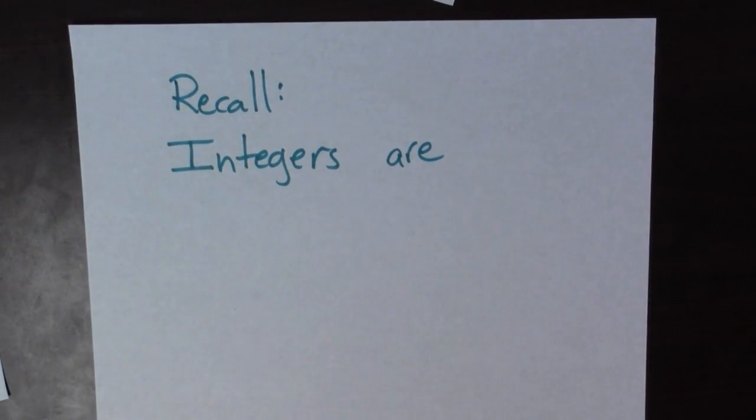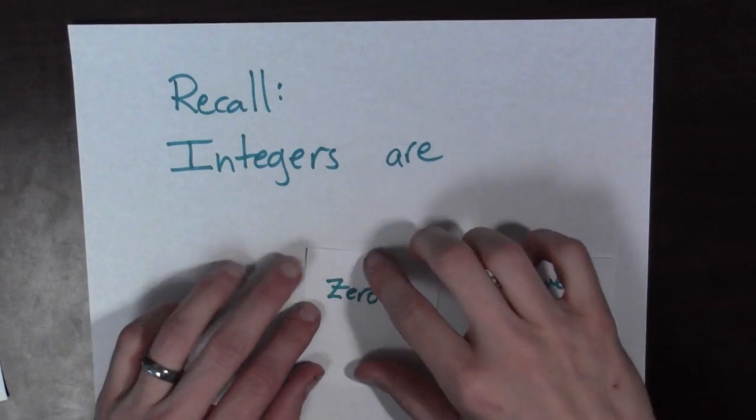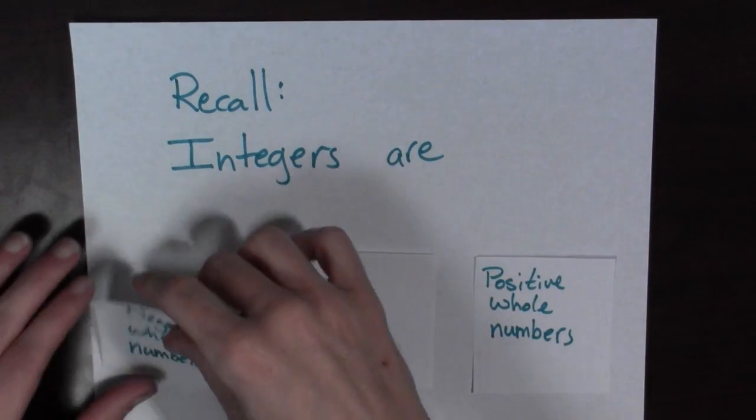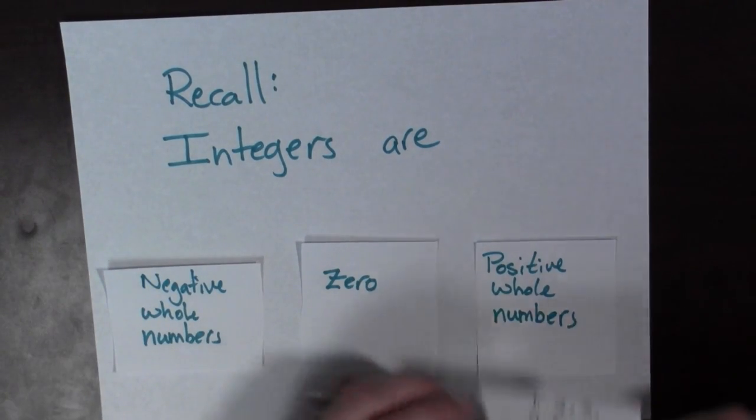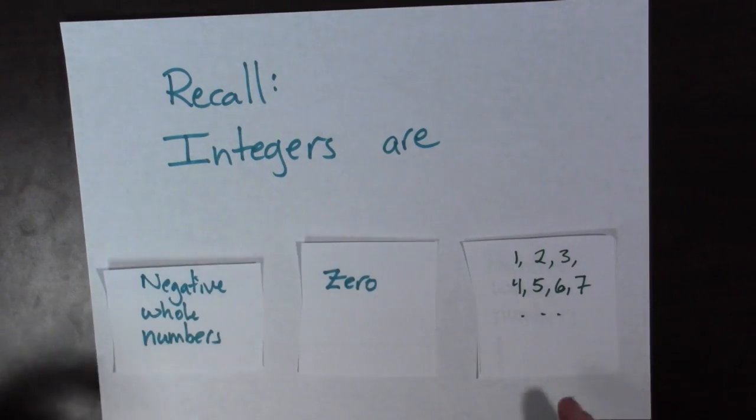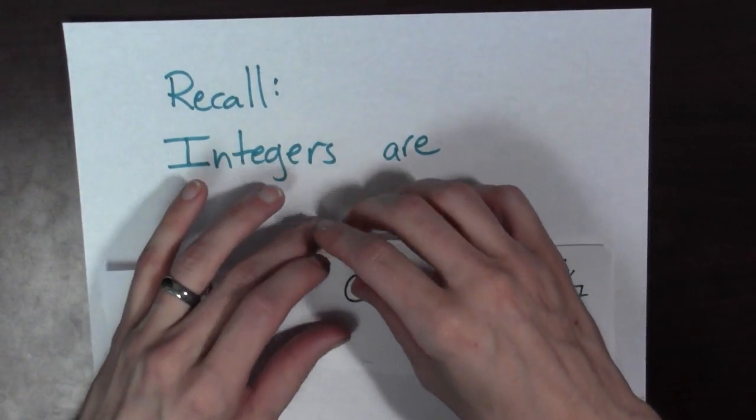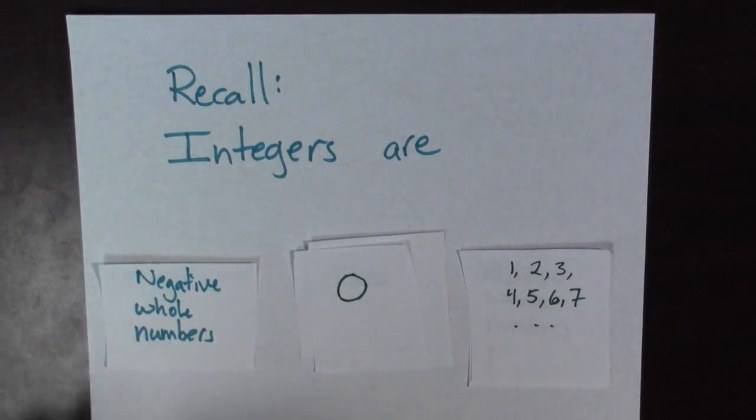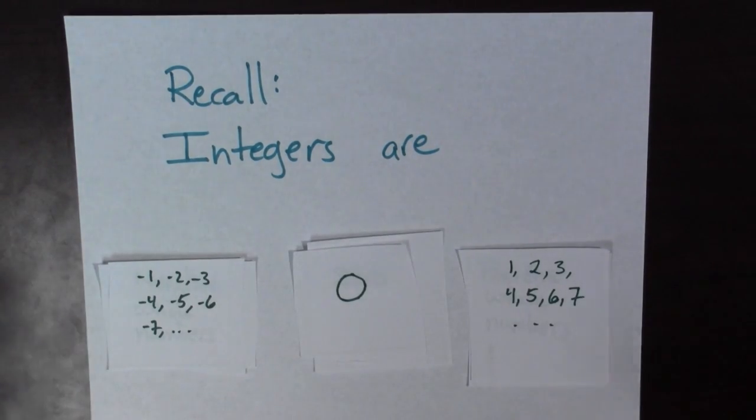Recall that the integers are the set containing the positive whole numbers, 0, and the negative whole numbers. And if you want an example of this, well, positive whole numbers are numbers like 1, 2, 3, 4, 5, 6, 7, and so on. 0, well, we all know what 0 is. 0 is just 0. And negative whole numbers are numbers like negative 1, negative 2, negative 3, negative 4, and so on.